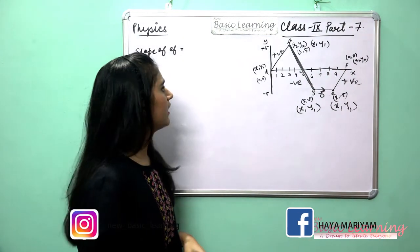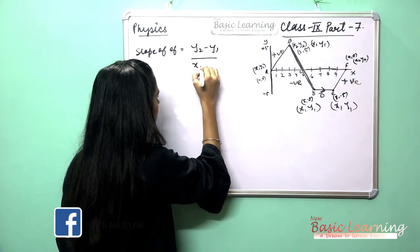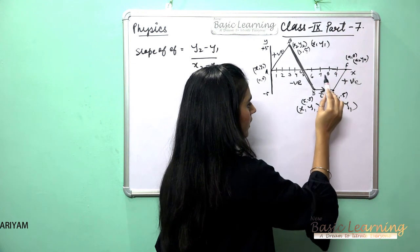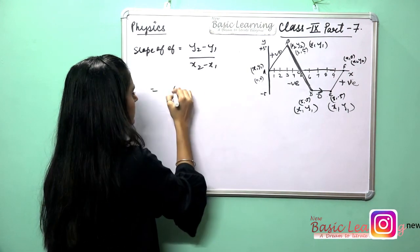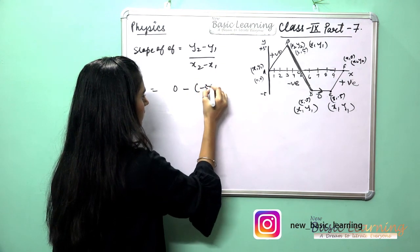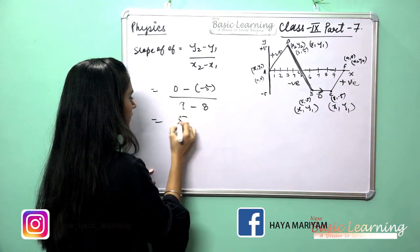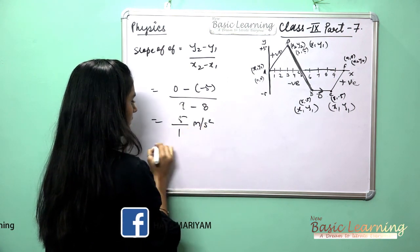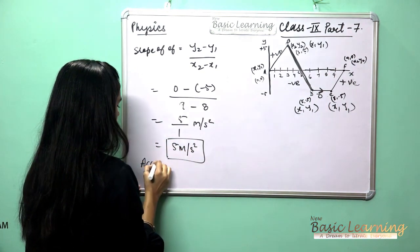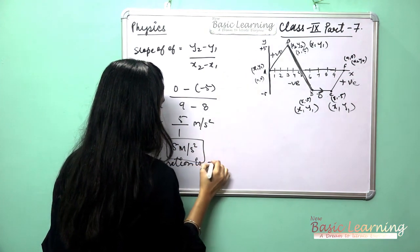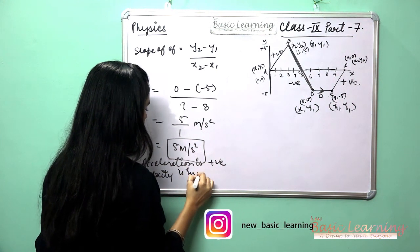Now we will calculate the slope of E to F. Using formula y2 − y1 / x2 − x1: y2 = 0, y1 = −5, x2 = 9, x1 = 8. So slope = (0 − (−5)) / (9 − 8) = 5 / 1 = 5 meters per second squared. It is positive, so the acceleration is positive and the velocity is increasing.